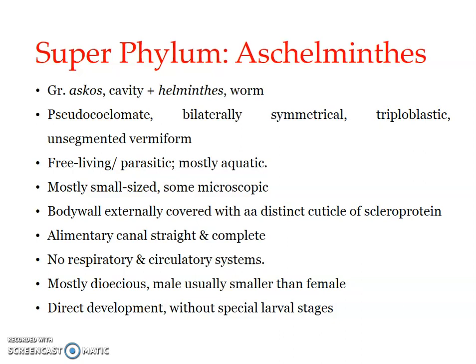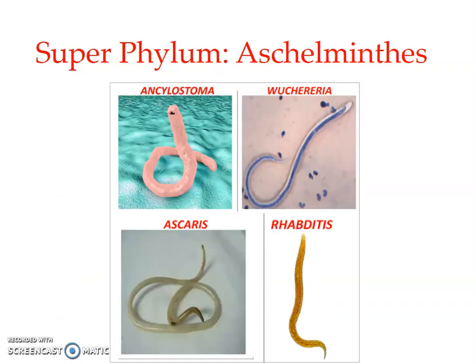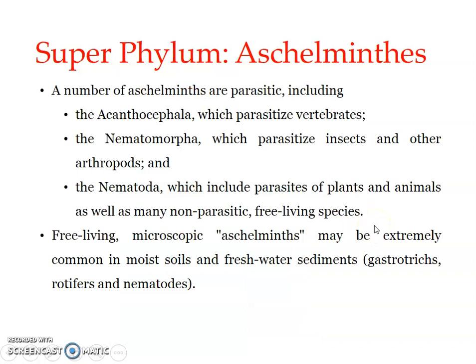These are the general features of Aschelminthes. A few examples you may have come across: Ancylostoma duodenale, Wuchereria bancrofti, Ascaris lumbricoides, Rhabditis, etc. A few of these examples we will be learning in detail later.